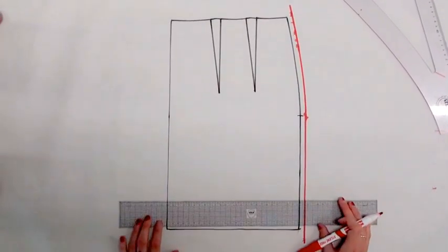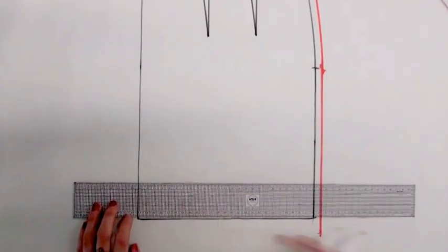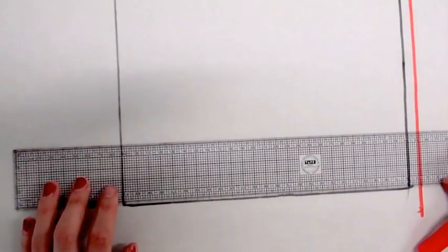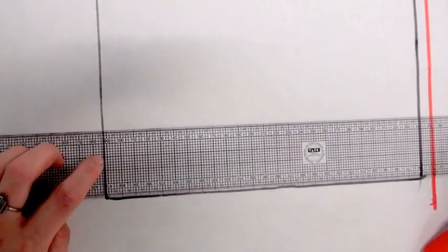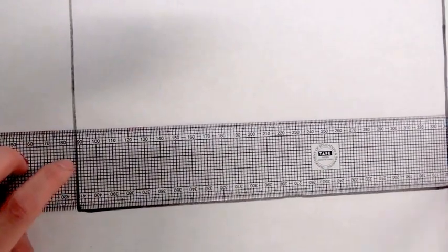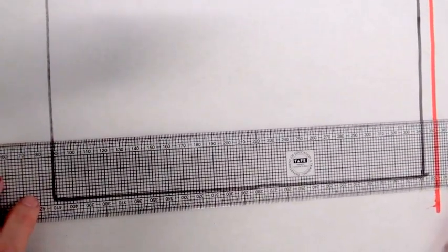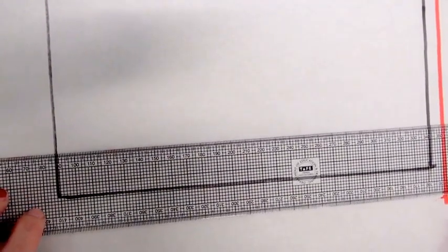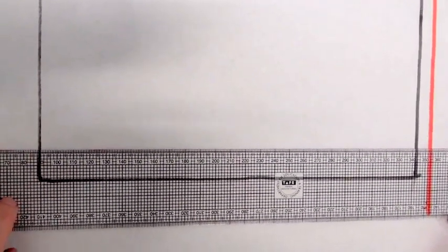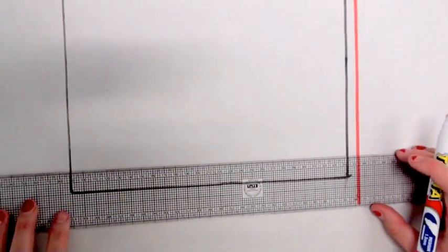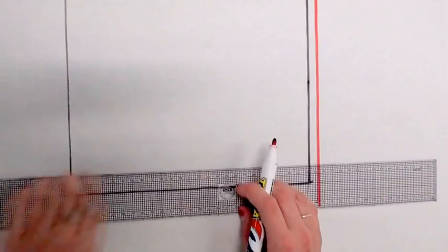If you want to add hem allowance—hem allowances on a straight line like this are often of greater value than the seam allowances—for this example, let's add a three centimeter hem. So I want to first go one, that would give me one centimeter, two, three. Just got to make sure you hold it in line.